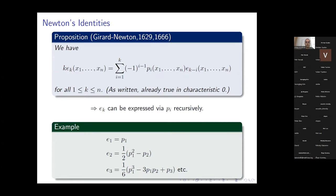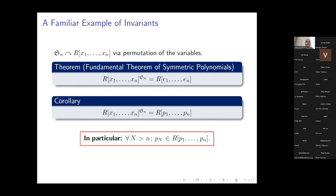The Girard-Newton identities imply that we also have a different set of generators for the ring of invariants, namely the power sums or Newton functions. The important point we'll need several times: if we take any integer N, then the corresponding power sum P_N can be generated by all power sums up to P_n (where n is the number of variables). So regardless of how big N is, it can be written as a polynomial in P_1 through P_n.